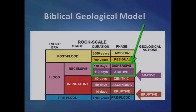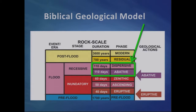I believe the biblical geological model of Taz Walker is very helpful here. In the recessive stage of the flood, the floodwaters were draining off the emerging continents into the newly forming ocean basins — first the abative phase, then the dispersive phase. That's key to understanding the features of planation and water gaps we've looked at.